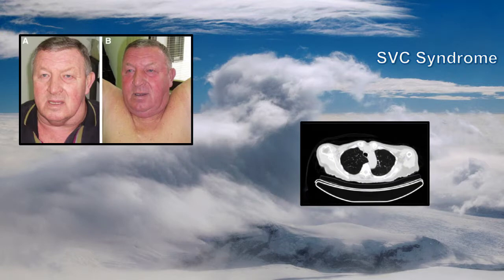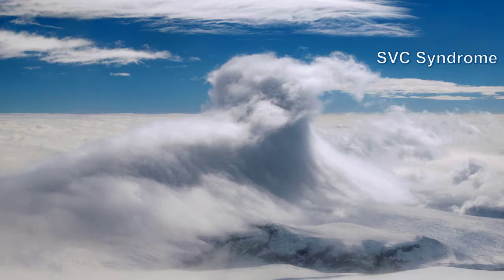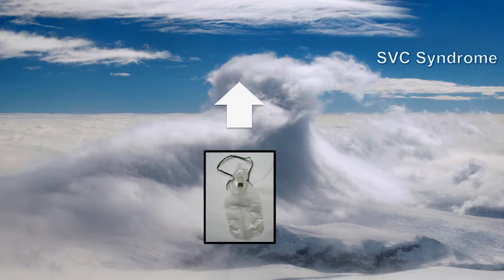To investigate SVC syndrome, do a CT chest with contrast. You may see abnormalities on chest x-ray, but those are non-specific. If you find someone with this, sit the patient upright and give oxygen. Those with stridor from laryngeal edema or obstruction, or with altered level of consciousness, may benefit from emergency endovascular stenting. Steroids and diuretics may be considered, but they're not likely to offer any major benefits.